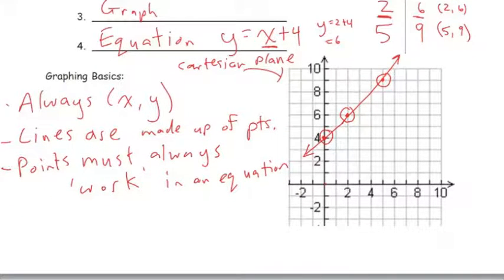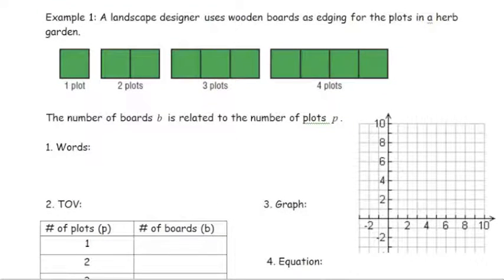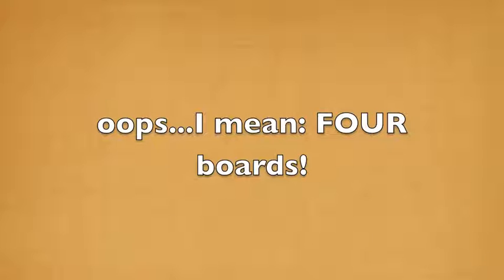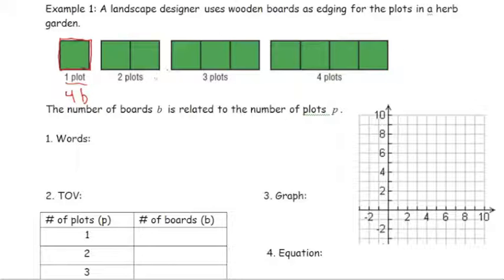Example 1: a landscape designer uses wooden boards as edging for herb garden plots. We relate the number of plots (P) to the number of boards (B). With 1 plot, counting the surrounding boards gives 4. With 2 plots, we get 7 boards. With 3 plots, we get 10 boards. With 4 plots, we get 13 boards. We can see the number of boards goes up by 3 each time.